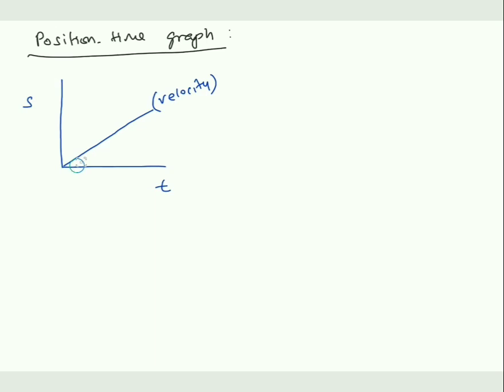In this case, the graph is a straight line, so the slope is constant, which tells us velocity is constant.